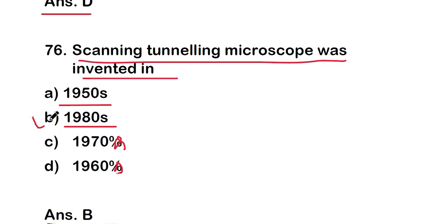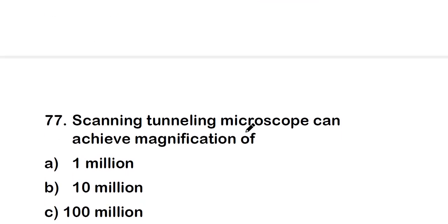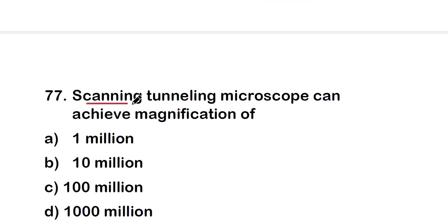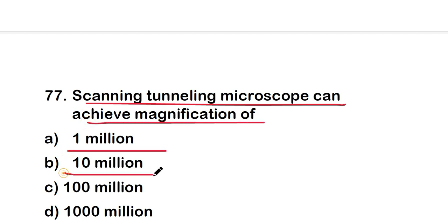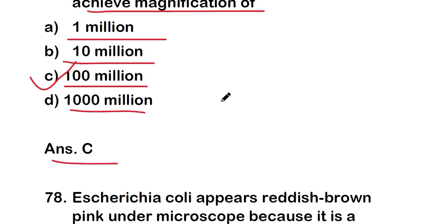Next question: a scanning tunneling microscope can achieve a magnification of — 10,000, 1,000,000, 100 million, or 1,000 million? The right answer is option C — 100 million. A scanning tunneling microscope can achieve a magnification of 100 million.